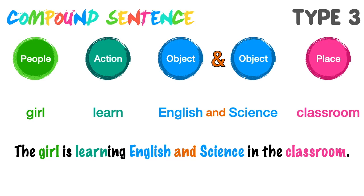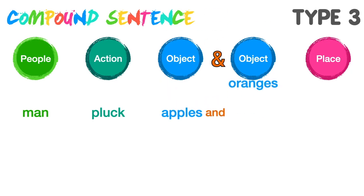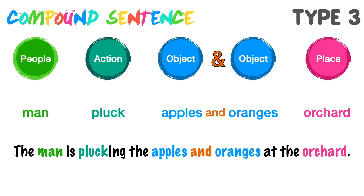Boleh tak kita guna 'the English and the science'? Tak boleh ya adik-adik. Sebab apa? English dan Science adalah kata nama khas — huruf besar di depannya. So, adik-adik tidak boleh meletakkan 'the' di depan objek ini. The girl is learning English and science in the classroom. Contoh yang berikutnya: People — Man. Action: Pluck — petik. Objek yang pertama: Apples. And objek yang kedua: Oranges. Di mana? Orchard — iaitu kebun. Ayat lengkap: The man is plucking the apples and oranges at the orchard. Sangat senang kan? Inilah Type 3 compound sentence — jenis yang ketiga ada dua objek.